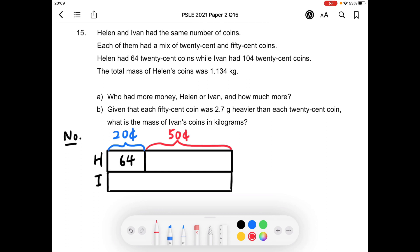While Ivan had 104 20 cent coins. So this is the 104 20 cent coins that Ivan had. I'm just going to cut the 104 into 64 and 40. So this is 64, this is 40, and they both add up to 104 20 cent coins that Ivan had. The rest of the coins here will be his 50 cent coins.